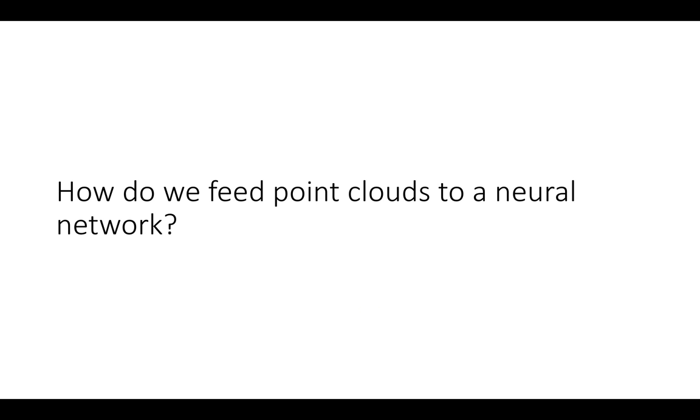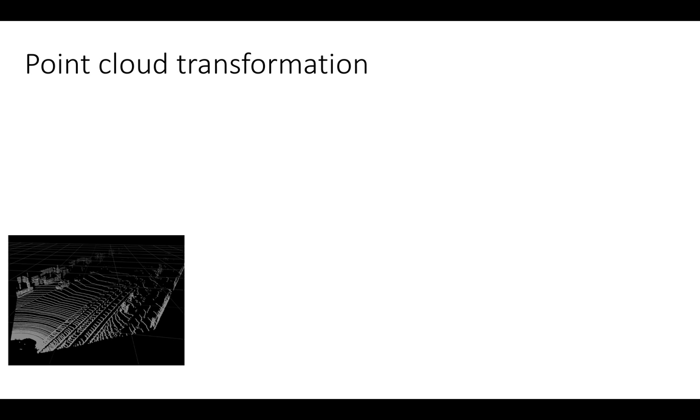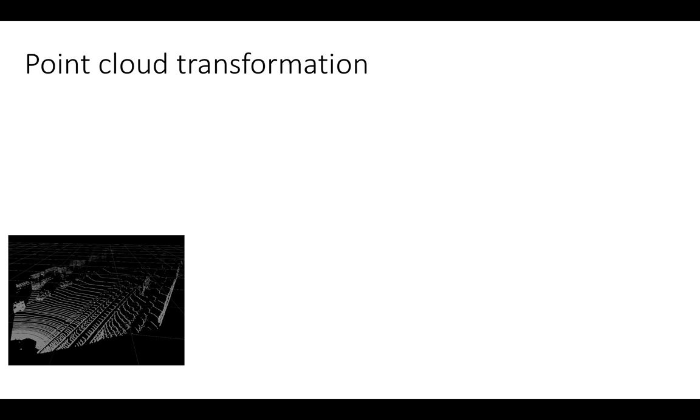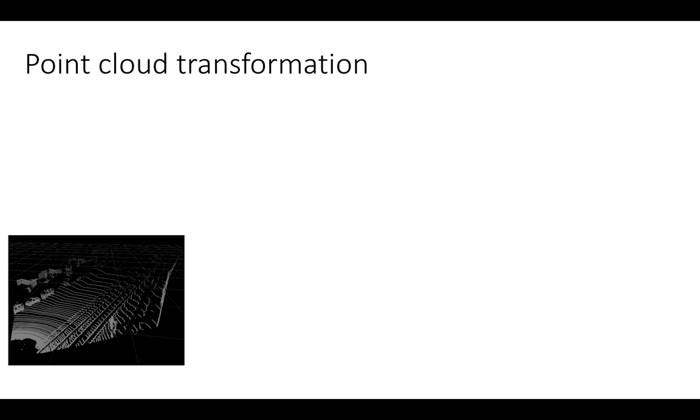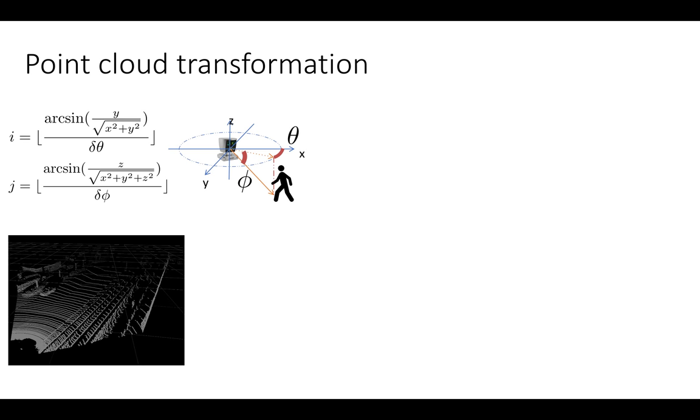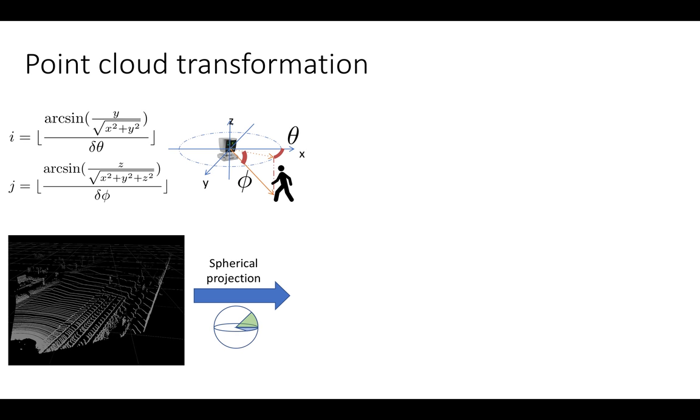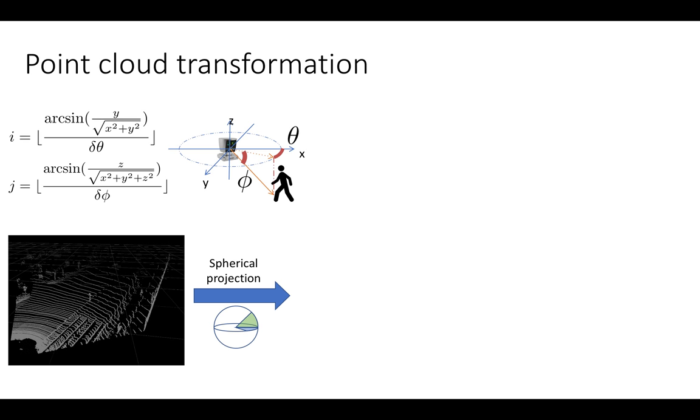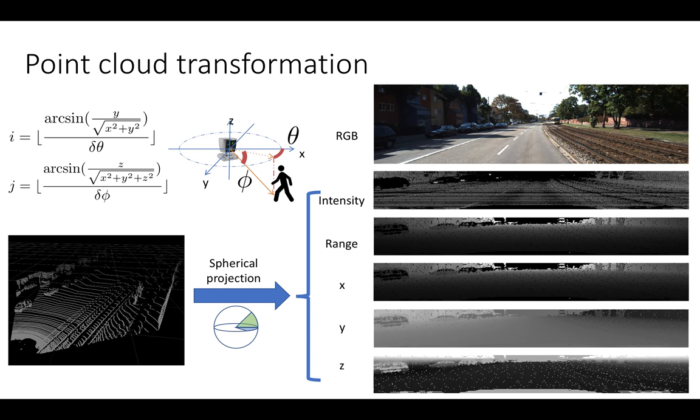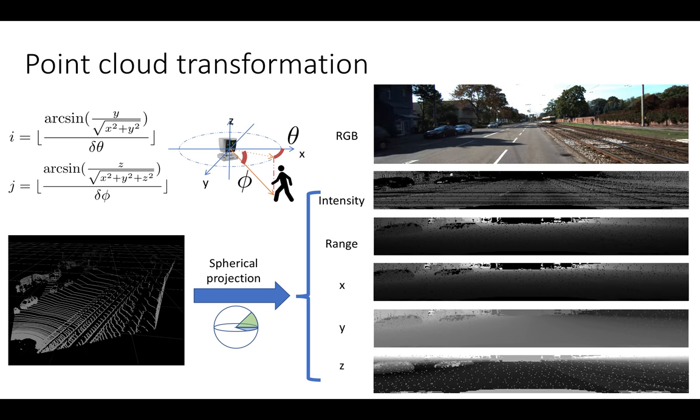This is our data, but how do we pass point clouds to neural networks? On the bottom left, we again have our point cloud. We choose to project all our points onto a 2D spherical surface. Using this spherical projection, we then get a set of 2D channels that maintain structural information present in our original RGB image.